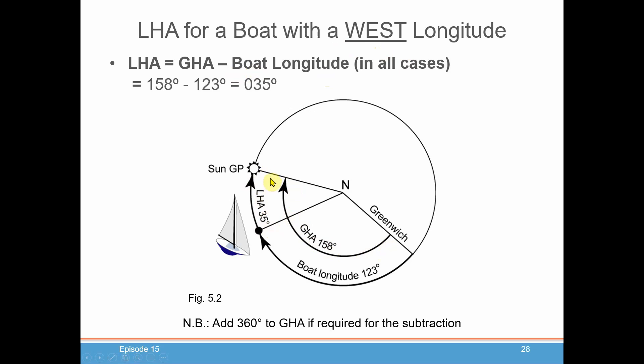And in our example, 158 degrees minus the boat's longitude of 123 degrees west gives us an LHA of 35 degrees. Now when you do this calculation, if for some reason you can't do the subtraction, you may have to add 360 degrees to the GHA so that the subtraction gives you a positive number.